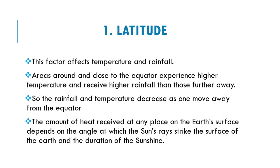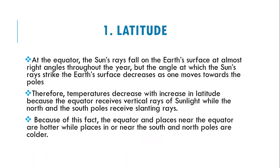The amount of heat received at any place on the earth's surface depends on the angle at which the sun's rays strike the surface and the duration of sunlight. At the equator, the sun's rays fall on the earth's surface at almost a right angle throughout the year, but that angle decreases as we move toward the poles. Therefore, temperatures decrease with increasing latitude.